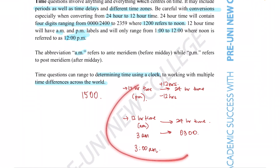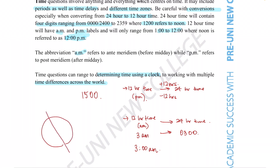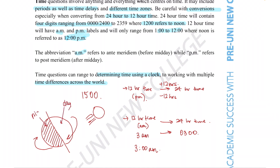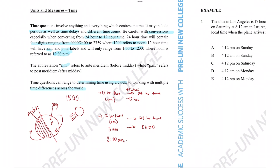Now that we understand how 24-hour and 12-hour time works, we also need to consider the fact that we have different time zones across the world, and that's because the earth is constantly rotating. If this is the earth rotating, with the Sun facing us, there's always going to be a side where it's nighttime and a side where it's daytime. To accommodate for that, we have what's called time zones, which tell us what time of day it is depending on where a country is on earth.